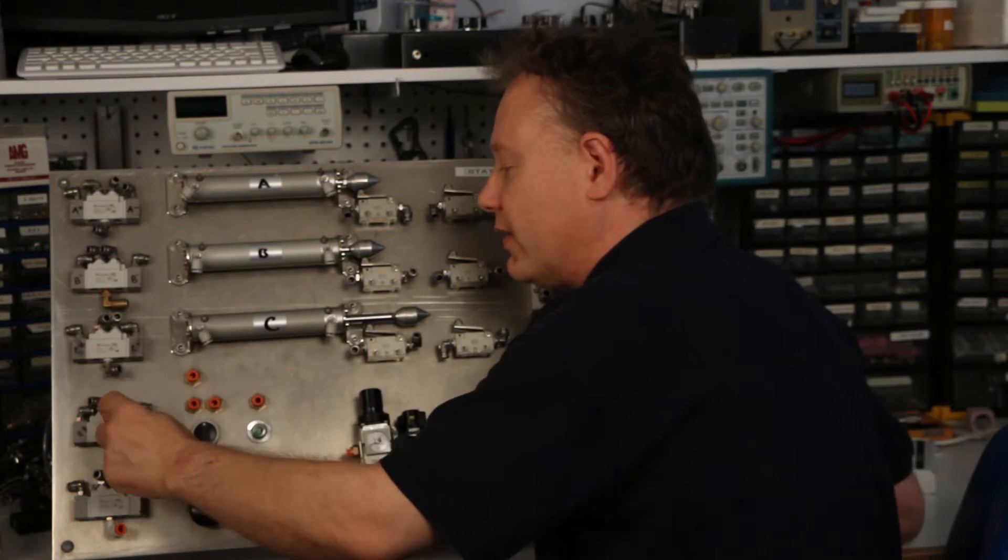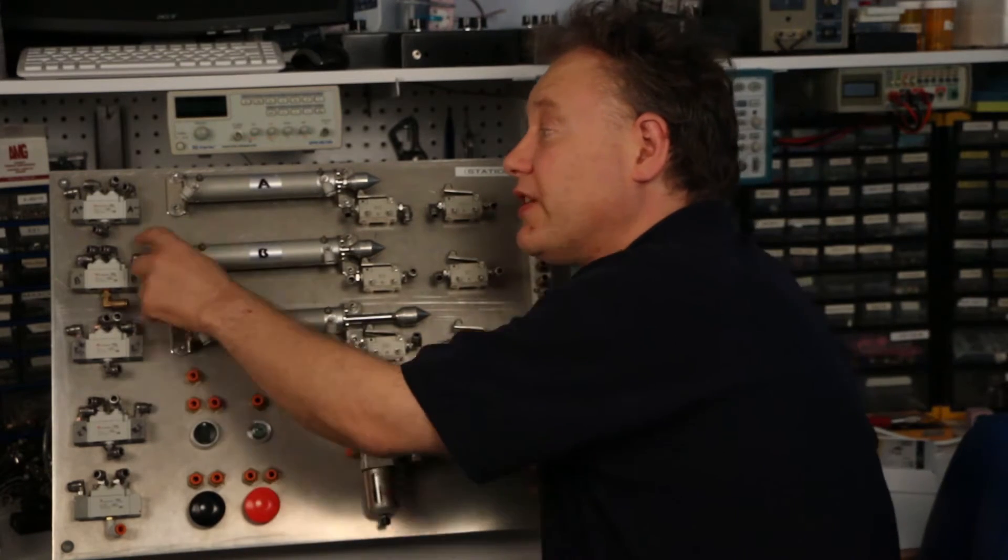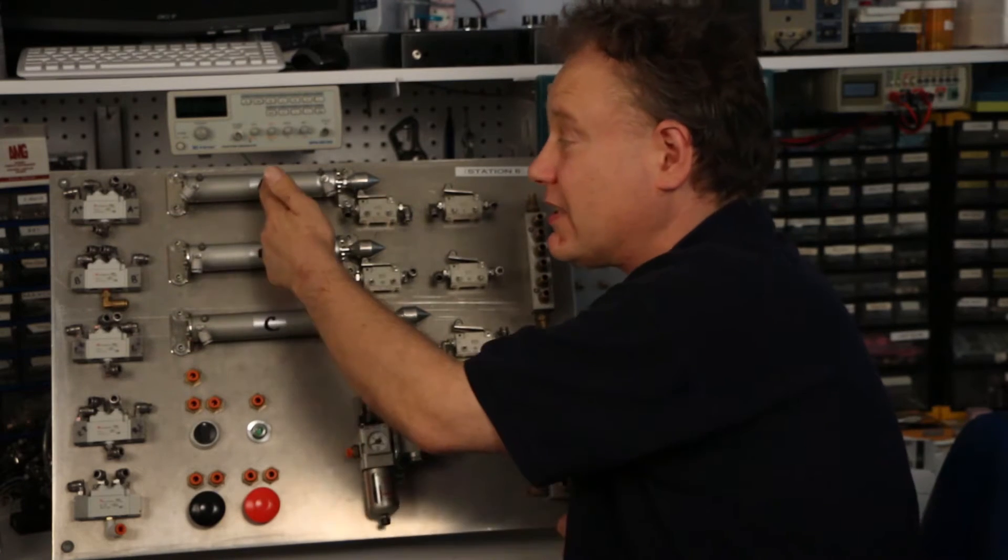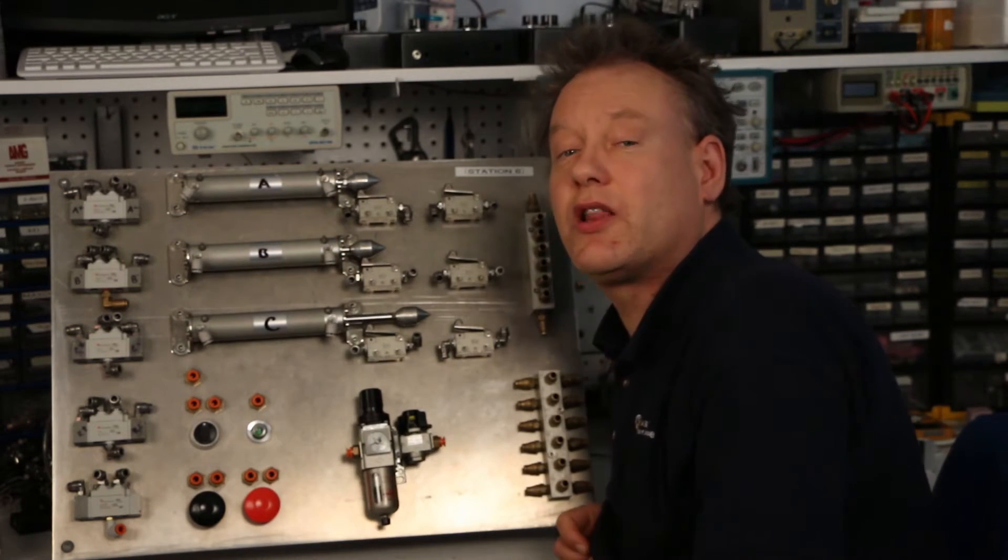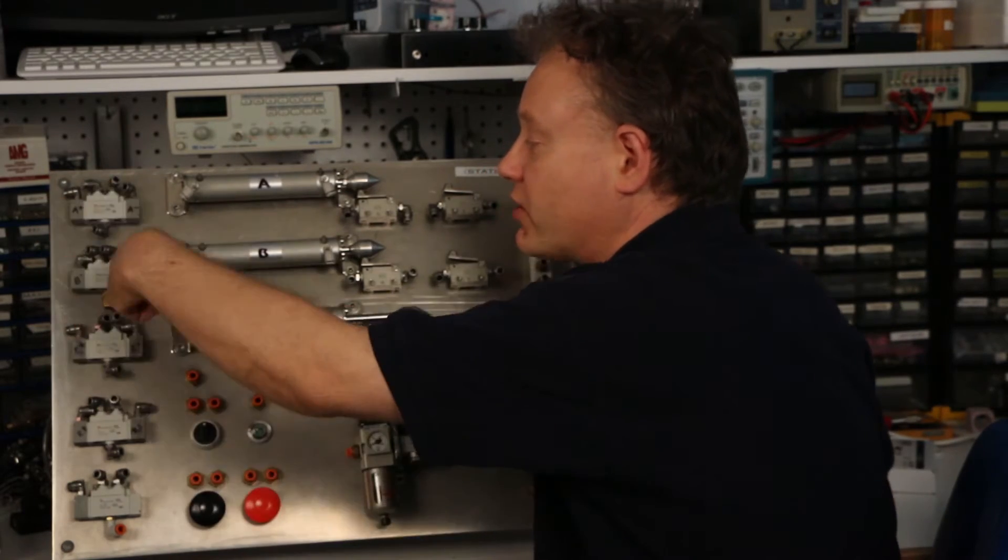These are five port, two position valves. Specifically, these three valves are used to control these actuators and they specifically control the direction of these actuators. We call them directional control valves.